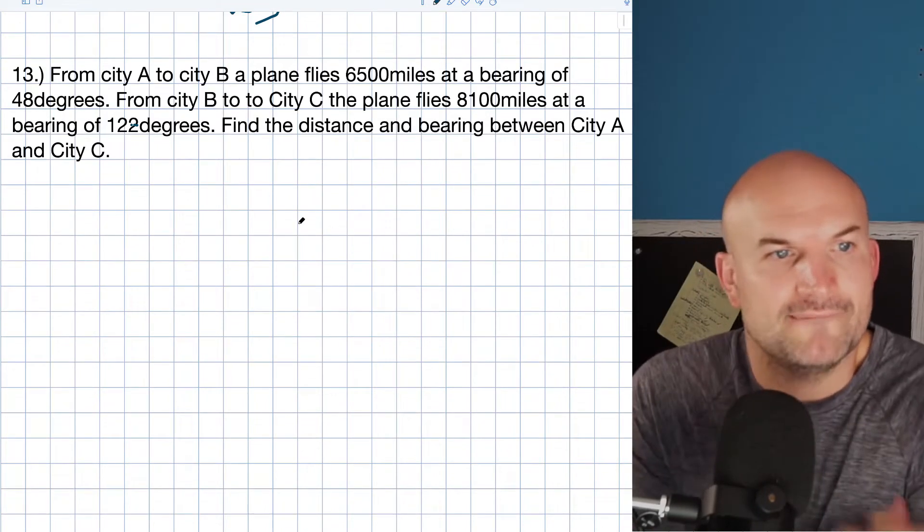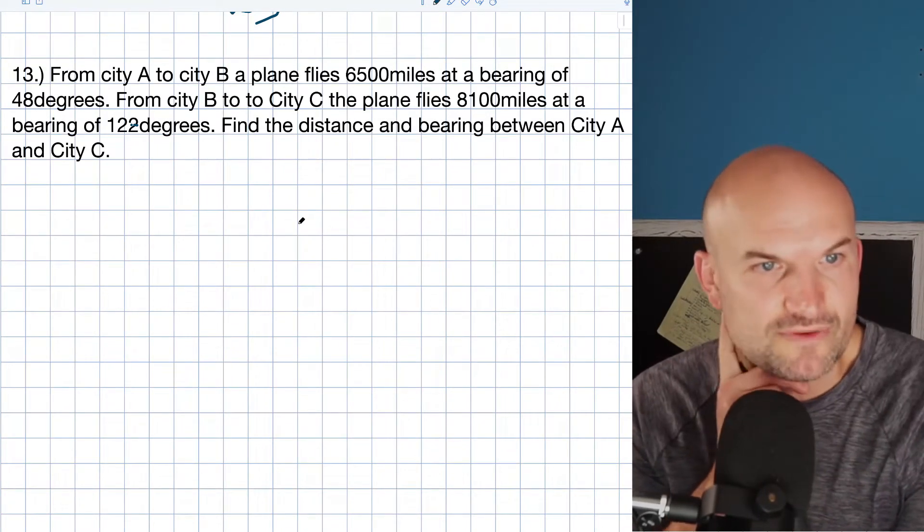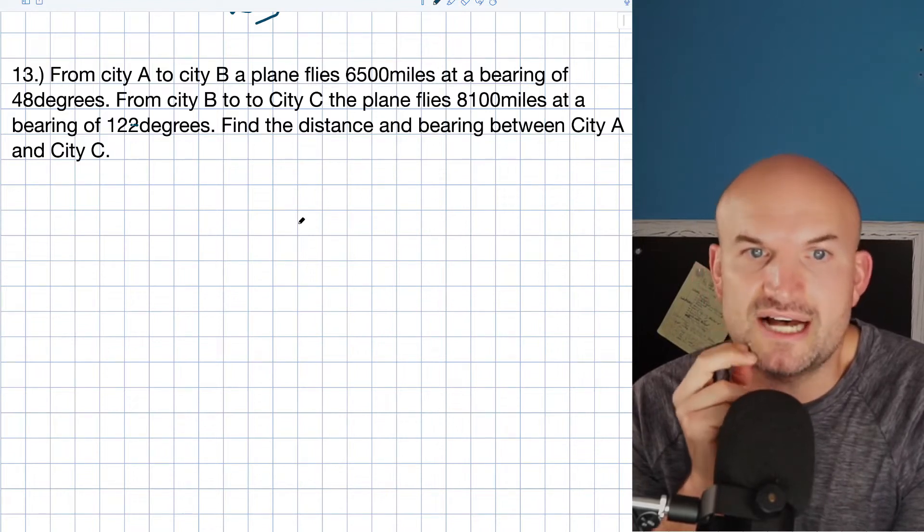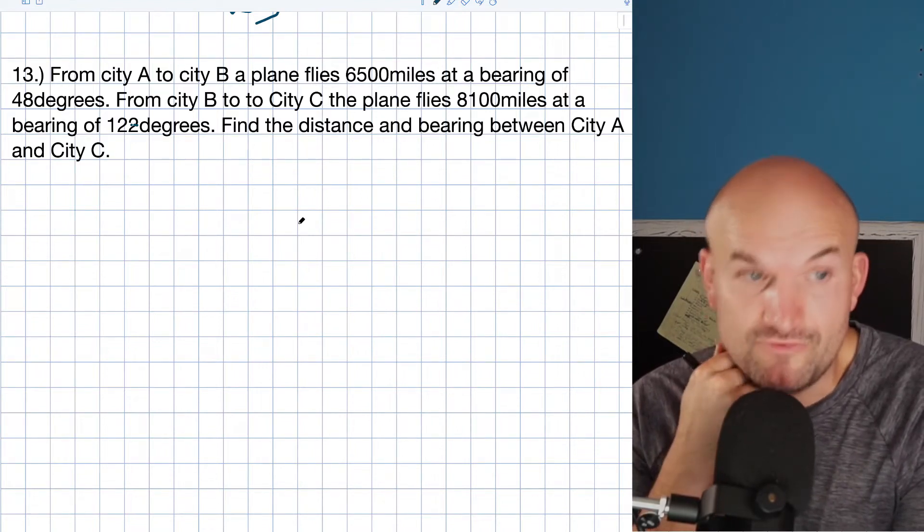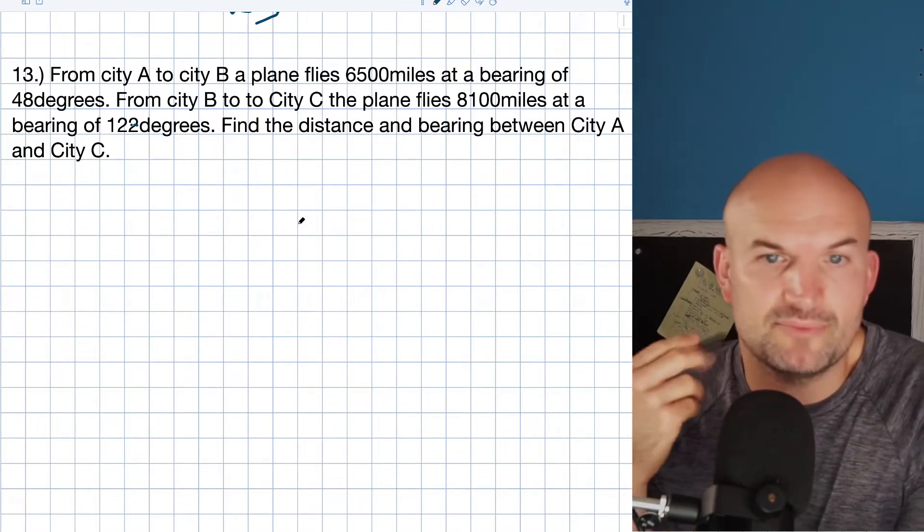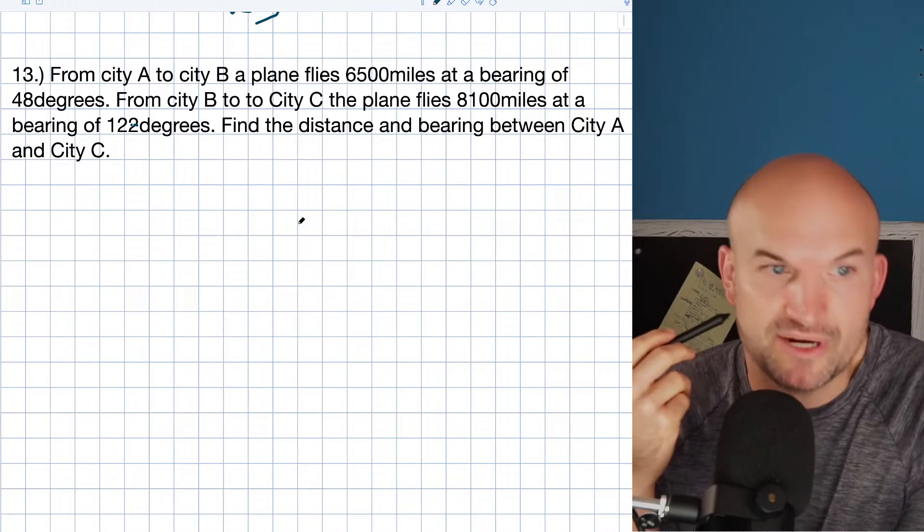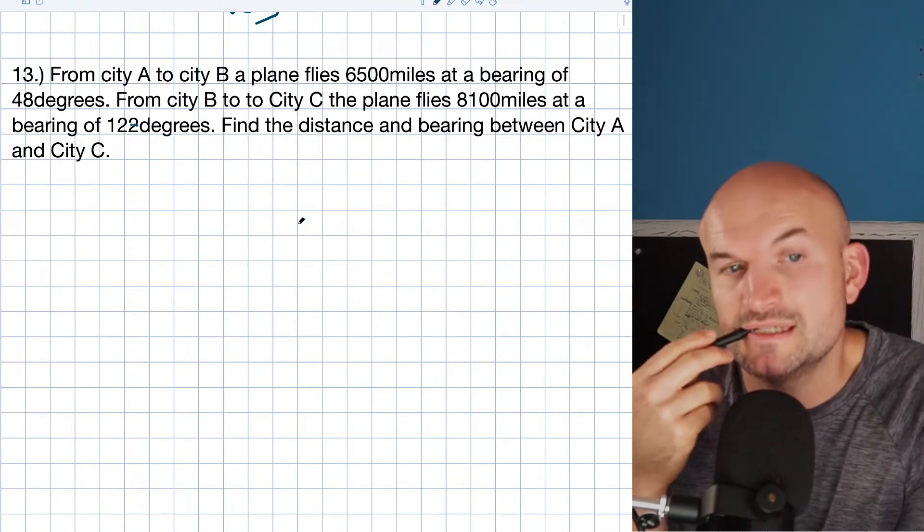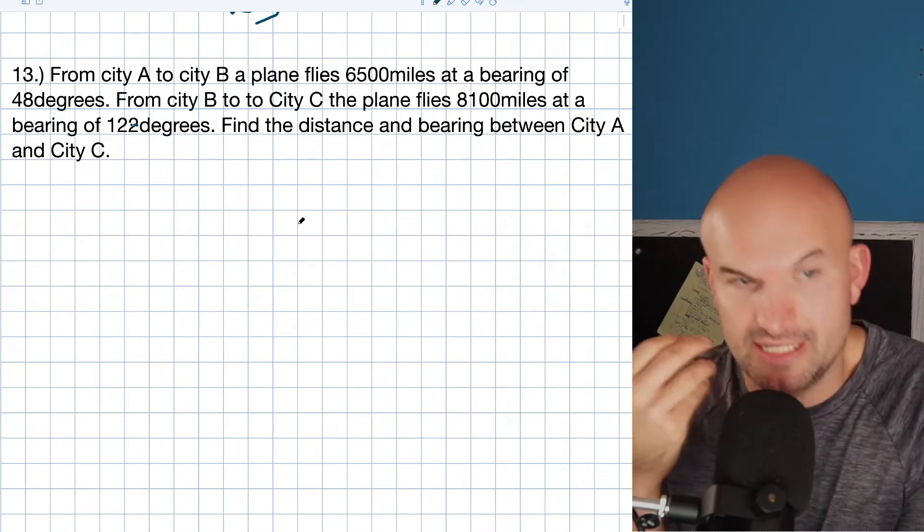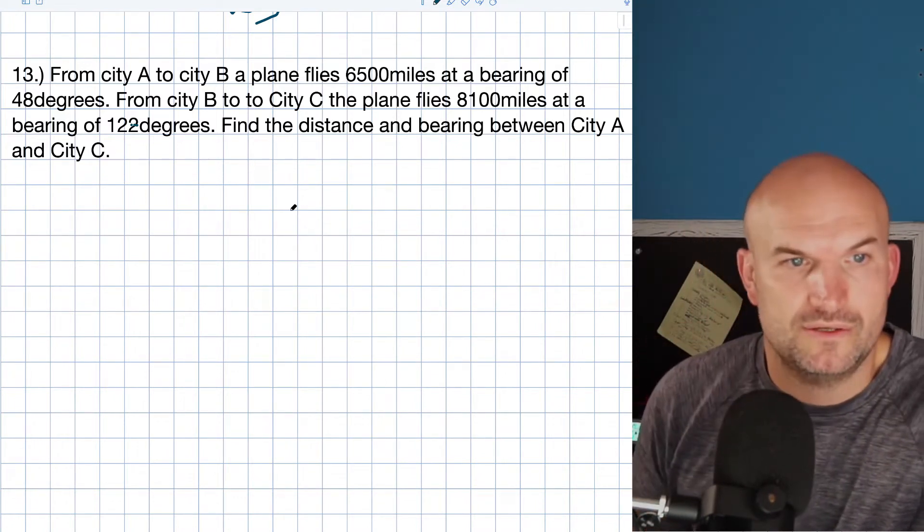So let's look at another one. Bearings. This one says from city A to city B a plane flies 6,500 miles at a bearing of 48 degrees. From city B to city C the plane flies 8,100 miles at a bearing of 122 degrees. Find the distance and bearing between city A and city C. Okay, so that's a lot going on.